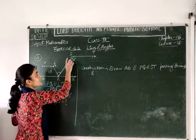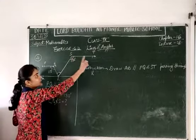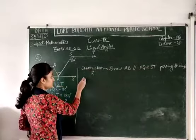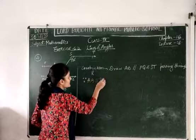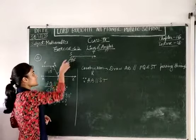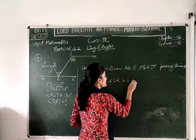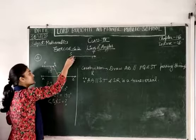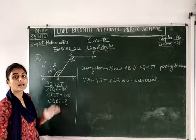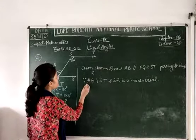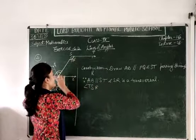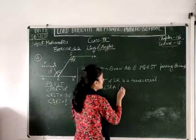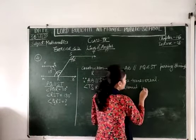Now, AB is parallel to ST by construction. Since AB is parallel to ST and SR is a transversal, the two angles — angle TSR and angle SRA — are alternate interior angles. So we write: angle TSR equals angle SRA. Reason: alternate interior angles.